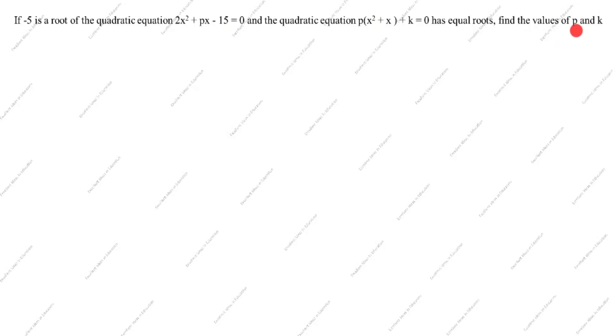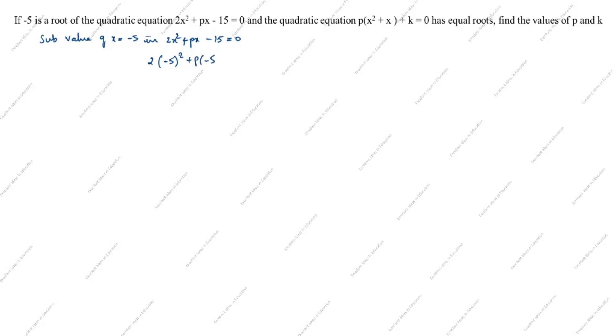What is given in this question? Minus 5 is the root of the quadratic equation. So we substitute the value x = −5 into the quadratic equation 2x² + px − 15 = 0. That gives us: 2(−5)² + p(−5) − 15 = 0.